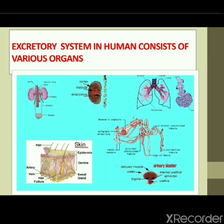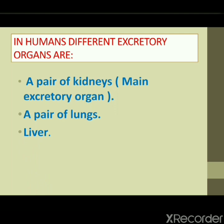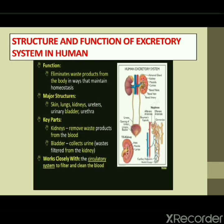The excretion system in humans consists of various organs. As you can see in the slide, it consists of a pair of kidneys, which is considered the main excretory organ removing urea and uric acid; a pair of lungs that excrete carbon dioxide from the body; the liver, which also eliminates nitrogenous waste; and the skin, which eliminates water in the form of sweat.